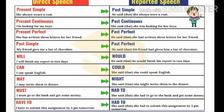If the reporting verb is in past tense, then: simple present becomes simple past, present continuous becomes past continuous, present perfect becomes past perfect, present perfect continuous becomes past perfect continuous, simple past becomes past perfect, past continuous becomes past perfect continuous, and past perfect remains the same.